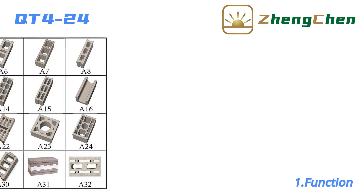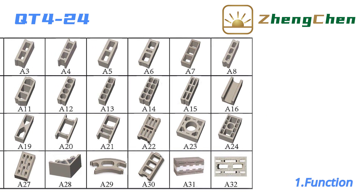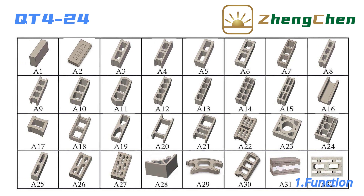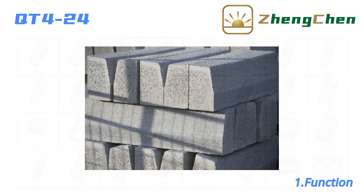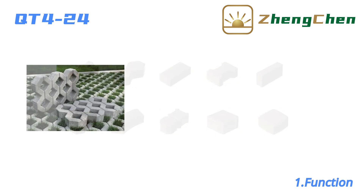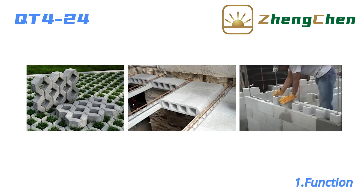QD4-24 can produce many different concrete blocks by changing the mold. They include hollow block, solid block, curb stone, interlocking paver, grass paver, horty blocks, habiterra interlocking block, and so on.